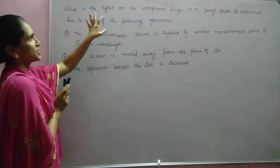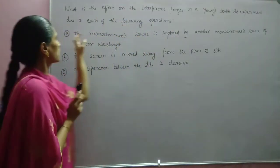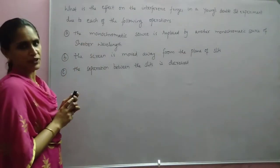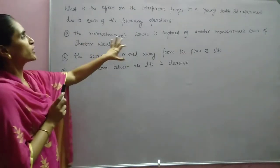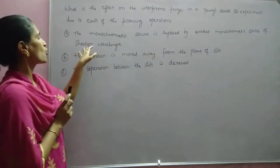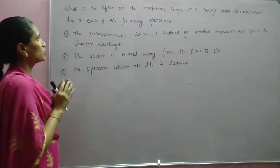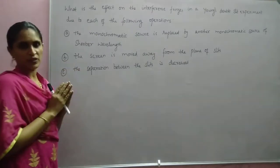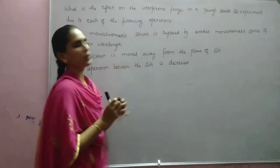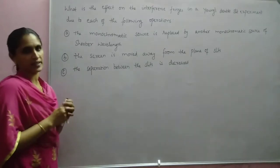The first question asks: What is the effect on the interference fringes in a Young's double slit experiment due to each of the following operations? First, the monochromatic source is replaced by another monochromatic source of shorter wavelength. Second, the screen is moved away from the plane of slits. Third, the separation between the slits is decreased.